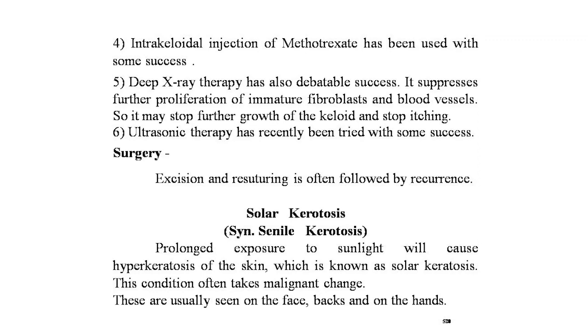The next topic is solar keratosis, also known as senile keratosis. Prolonged exposure to sunlight causes hyperkeratosis of the skin, which is known as solar keratosis. This condition often undergoes malignant change. It is usually seen on the face, backs of hands, and hands. Patients are usually above middle age and have typically worked outdoors for many years. The patient notices areas of thickened, patchy skin. Here is an image of solar keratosis, and a second image showing solar keratosis on the nose.